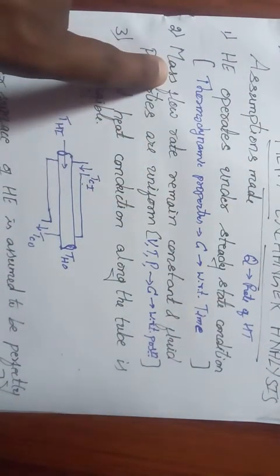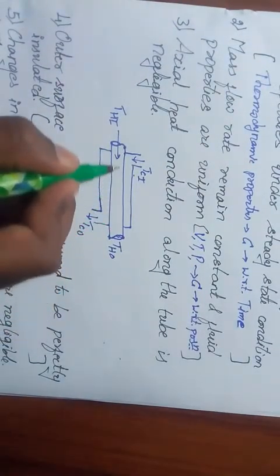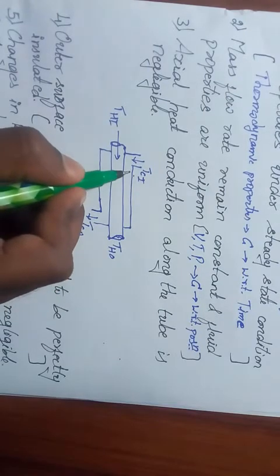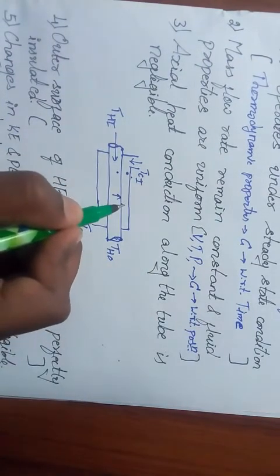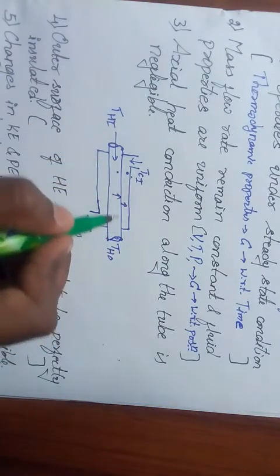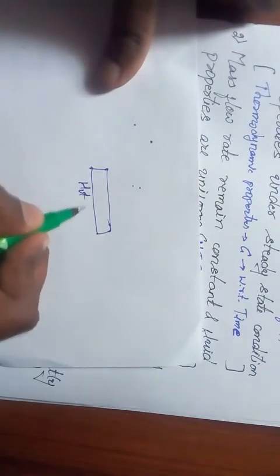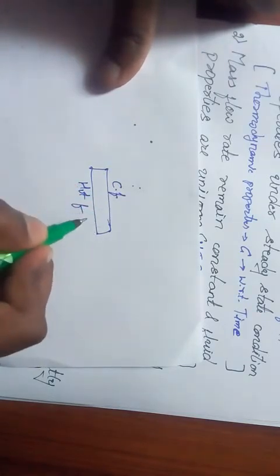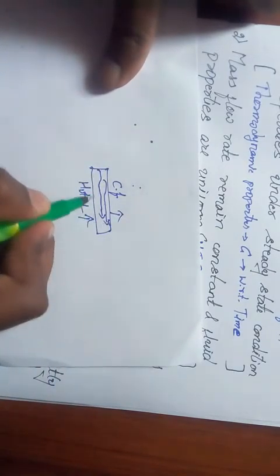Coming to the third point: axial heat transfer in a heat exchanger is negligible. That means if this particular line I am drawing is the metal part, there is heat transfer between this fluid and this fluid. Say this is hot; heat has been transferred to the surface and from the surface to the surrounding fluid. But what about the surface? That is one particular metal part. Here I have hot fluid and here I have cold fluid. It is being transferred from here to this metal, from this metal to the cold fluid. But in the axial direction there may be heat flow - this heat flow is neglected. That is what the third point means.